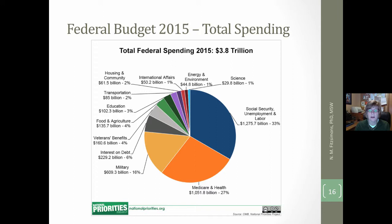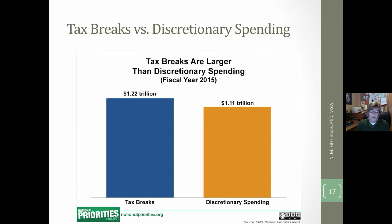This slide looks at total federal spending — all of it combined, discretionary and mandatory — giving a sense of overall spending, though it does not appear to include interest on the debt. Tax breaks are tax credits and tax deductions that can be taken at the individual and corporate level. This shows that tax breaks exceed the entire discretionary spending budget. You may hear at the federal level the need to look at these tax breaks in the tax code to get control of the federal budget.